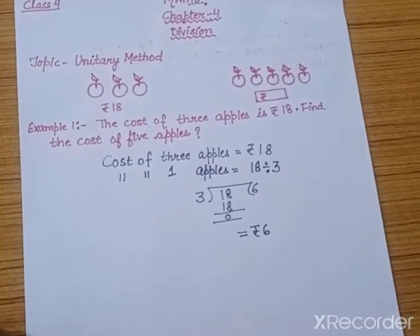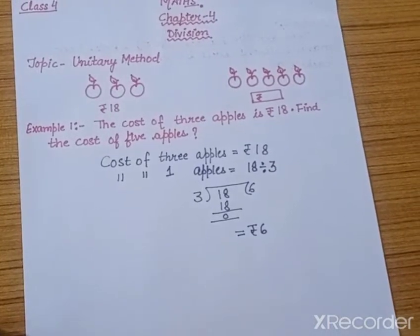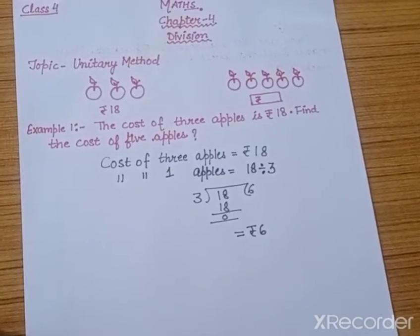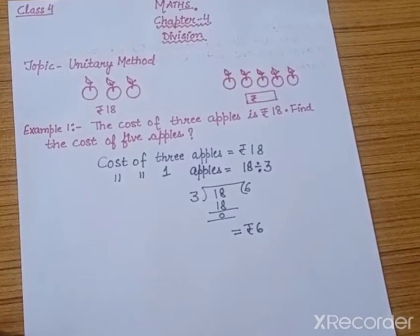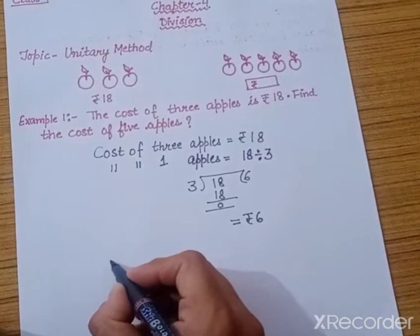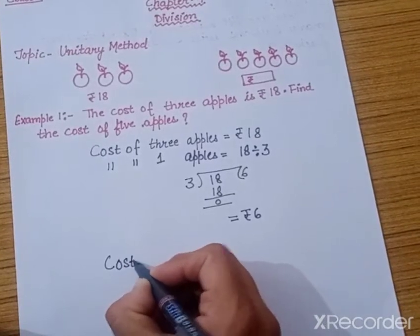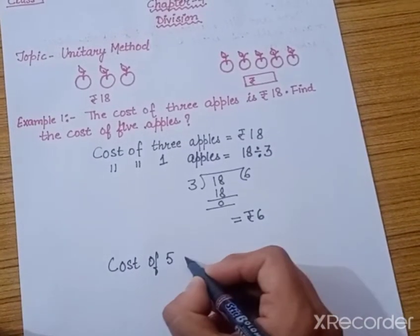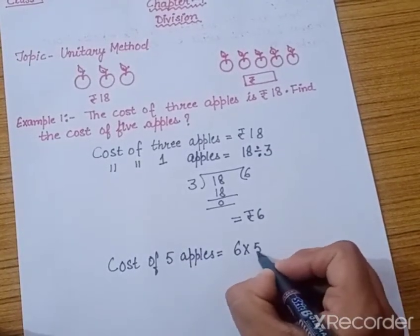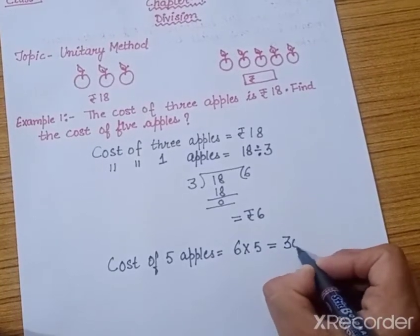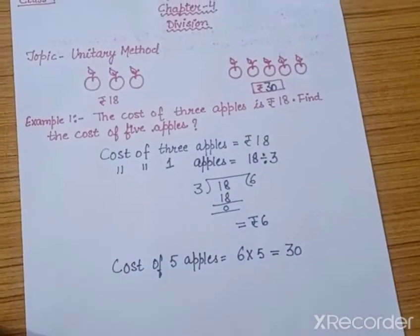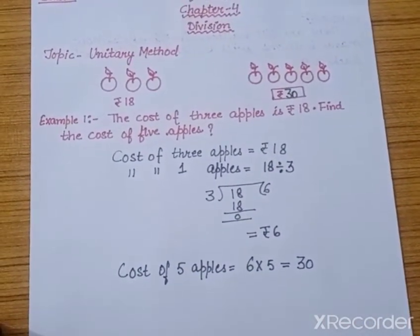Now they are asking us to find the cost of five apples. We now know the cost of one apple. With the help of this cost, we will find out the cost of the required number of apples. So the cost of five apples equals 6 multiplied by 5. Six fives are 30, so the cost of five apples is rupees 30. This way you can solve your examples.